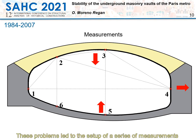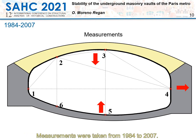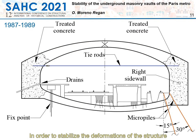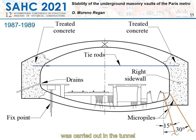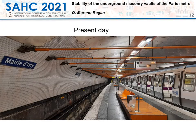A short time after the 1983 excavation, several structural problems were reported: cracks at the crown, cracks at the extrados, cracks at the slab, water infiltrations, and many others. These problems led to the setup of a series of measurements that revealed the subsidence of the masonry vault, increasing distance between sidewalls, and uplift of the slab. Measurements were taken from 1984 to 2007. To stabilize the deformations, from 1987 to 1989 a set of reinforcement works was carried out — micropiles and pre-stressed steel rods in the vault, visible to this day.